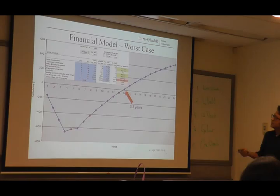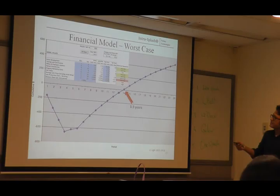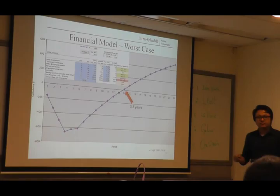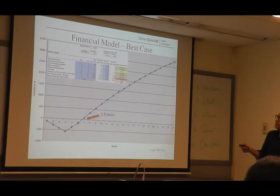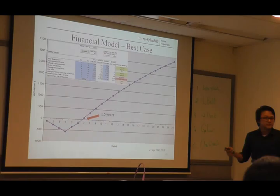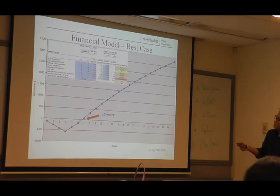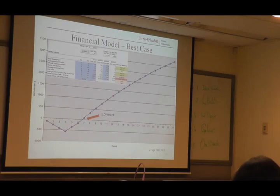This is our worst case scenario. We change variables for both macroeconomic and microeconomic factors, trying to focus on the very worst case. In this case, the breakeven point is shifted to 3.5 years and our NPV after six years is about $500K. In our best case, we don't change macro values like discount rate — we focus on what we can control — and after five years we are going to break even and are making about $3.3 million. Thanks, let me pass to Chichi.